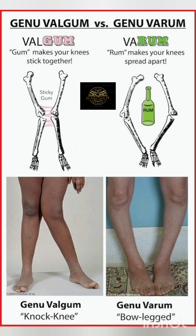In opposition, genu varum occurs when the knees are positioned outwards and the lower legs move inward. This causes discomfort and balance issues. It gives the appearance of bow-legged, and you can remember the word by the term 'rum,' which makes your knees spread apart.